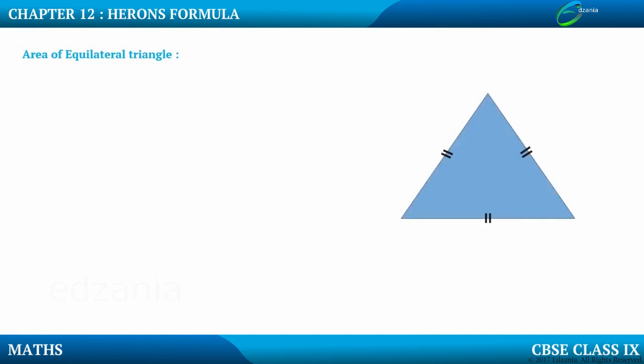So let me consider one equilateral triangle. Let me name this triangle, say PQR. This point is P, this is Q, this is R, and we can say that all the three sides of the triangle are equal.